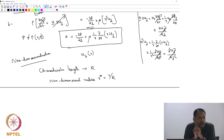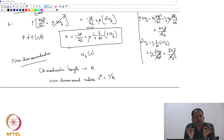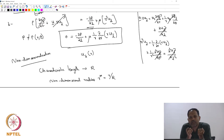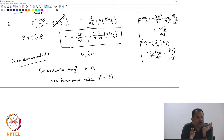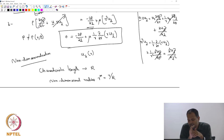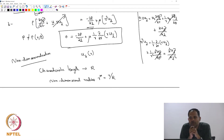That is a good thing about non-dimensionalization: you have gotten rid of the length dimension and the variable now ranges between 0 and 1. If you had taken diameter it would go between 0 and a half — but either way it stays in a bounded range; it is not going to go from 0 to 1000 or 10000 to some large number. Basically it is going to be a number of order 1, meaning around 1.